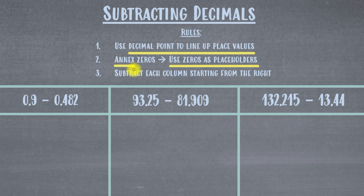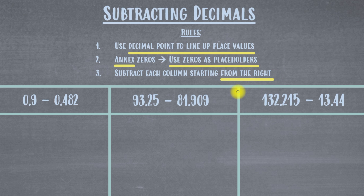Step number three is to subtract each column starting from the right. So when you start subtracting, you're starting from the right column that you have set up. For each of these examples, we're going to put one number on top of the other and make sure that everything is lined up correctly so that when we subtract we don't run into any issues.